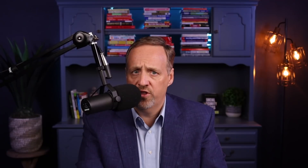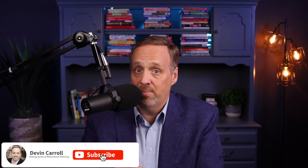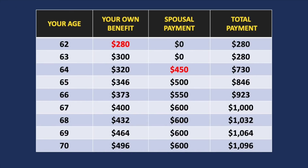But what happens if the lower-earning spouse filed for their benefit at age 62, but the higher-earning spouse has not yet filed? In this case, the spousal payment is not payable. Here's the important part: the age of entitlement to the spousal benefit is the age used for calculating the reduction to the spousal benefit. For example, if the lower-earning spouse filed for benefits at 62 but did not become entitled to spousal benefits until 64, the benefit from their own work would be reduced to 70% of their primary insurance amount. But the spousal payment portion would be reduced as if filed at 64, which would result in a spousal payment reduction down to 75%. This gives the lower-earning spouse $280 from their own benefit and $450 from the spousal payment, for a total payment of $730.